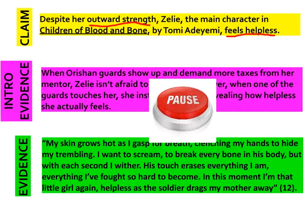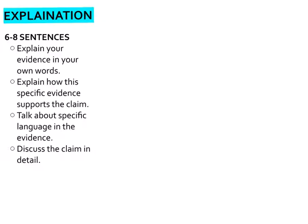You should be halfway through your paragraph at this point. Let's work on our explanation. Remember, your explanation or your analysis is what you're really focusing on today. It's actually pretty long for a paragraph where you've only chosen to use one piece of evidence — it should be six to eight sentences long. In those sentences, you're going to explain your evidence in your own words, explain how this evidence supports the claim, talk about specific language like words or phrases in the evidence, and discuss the claim in detail. You do not need to do this in order — in fact, I'm not going to do it in order.